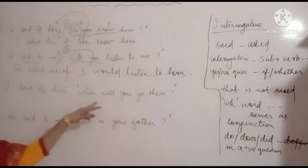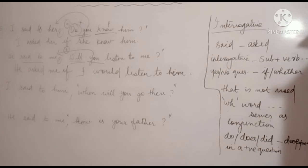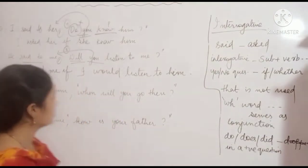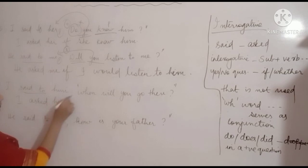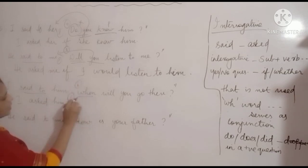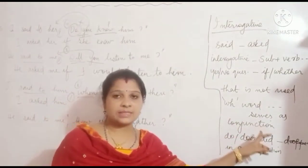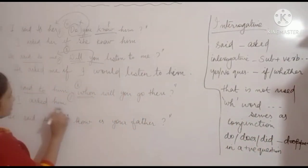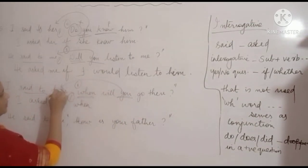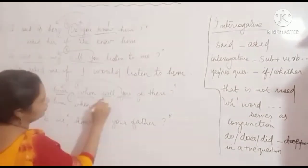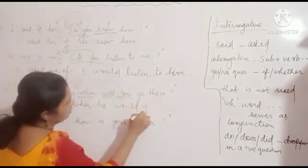Interrogative example 7: 'I said to him, when will you go there?' WH-question — 'when' is repeated and serves as conjunction. 'Said to' becomes 'asked'. 'You' changes to 'he' (according to object 'him'). 'Will' changes to 'would'. Answer: I asked him when he would go there.